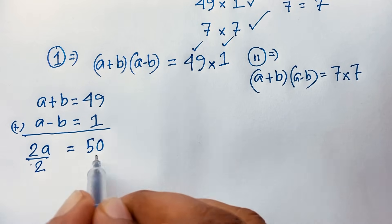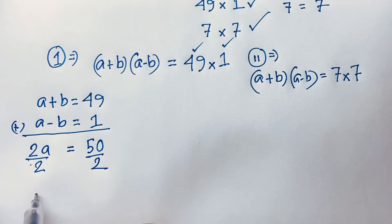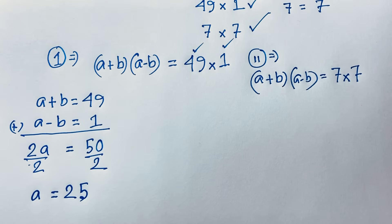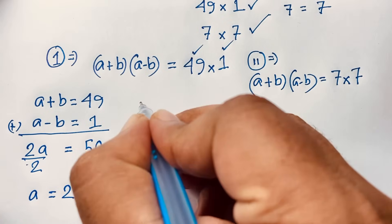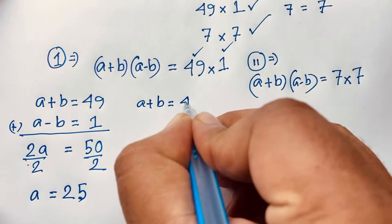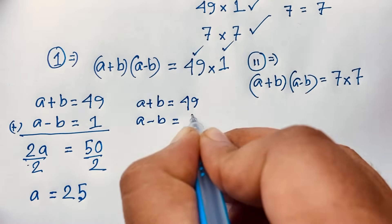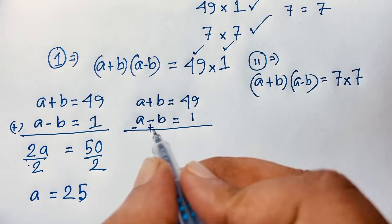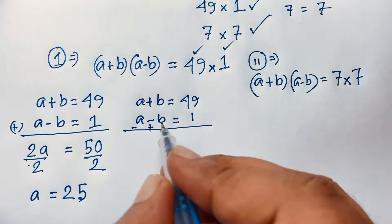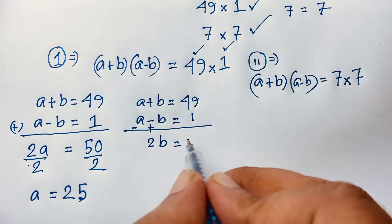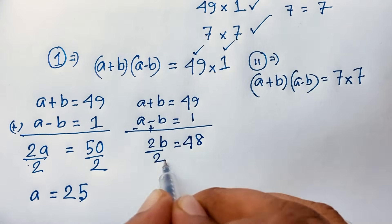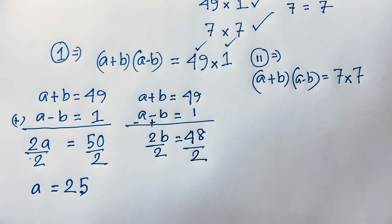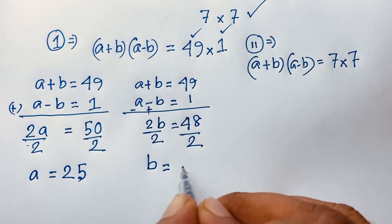Dividing both sides by 2, we get a = 25. Then, subtracting the equations: a - a = 0, and b + b = 2b. 49 - 1 = 48, so 2b = 48. Dividing both sides by 2, we get b = 24.